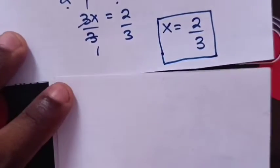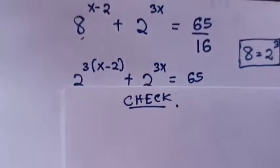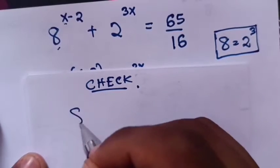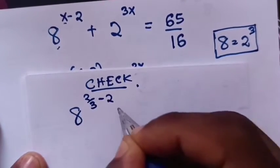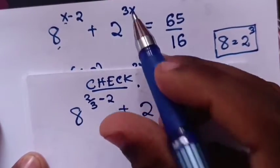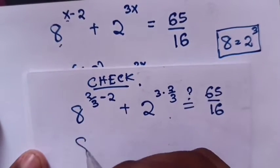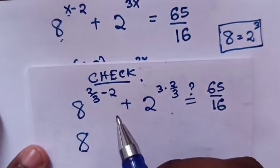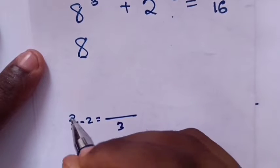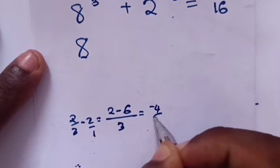Let's check if this answer is correct. From our original equation, substituting x = 2/3: 8^(2/3 - 2) + 2^(3 × 2/3) = 65/16. For the exponent: 2/3 - 2 = (2 - 6)/3 = -4/3. So we have 8^(-4/3) + 2^2.